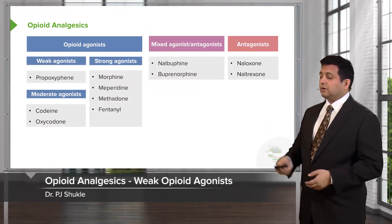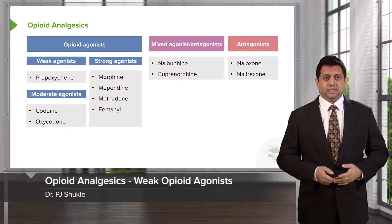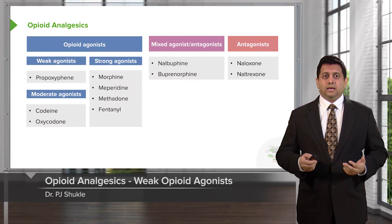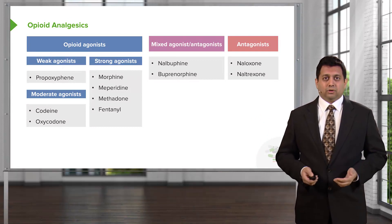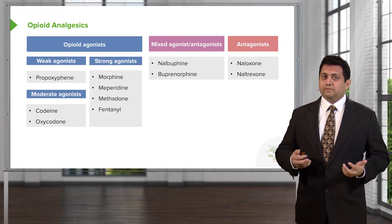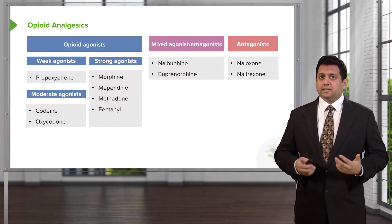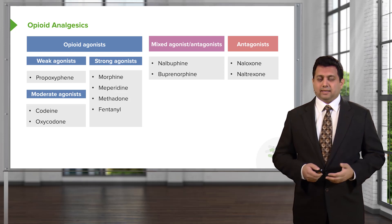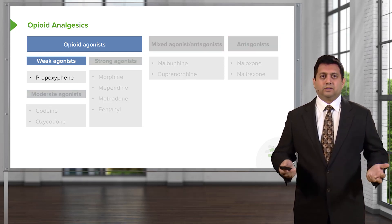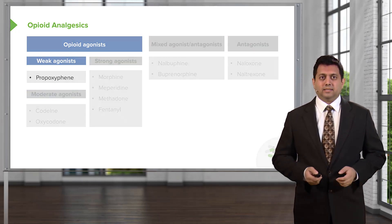Let's go back to the list of our opioid analgesics. We have weak, moderate, and strong agonists. We also have mixed agonists and antagonists. Let's start with the weak agonists.